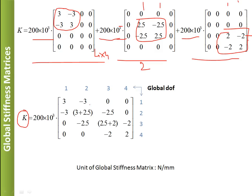After assembly, the final global stiffness matrix contains: [3, -3; -3, 3] for element 1's block, [2.5, -2.5; -2.5, 2.5] for element 2's block, and [2, -2; -2, 2] for element 3's block, all multiplied by 200×10³. The unit of the global stiffness matrix is N/mm.